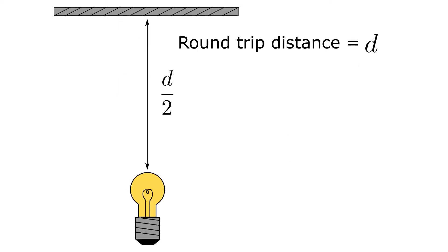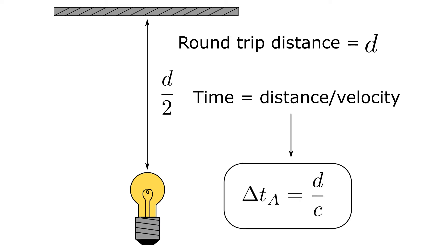When the experiment is conducted, the time that Albert measures is just going to be the total distance the light travels divided by the speed it travels. We can write this explicitly as the change in time for Albert is equal to d over c. However, Isaac sees something very different.